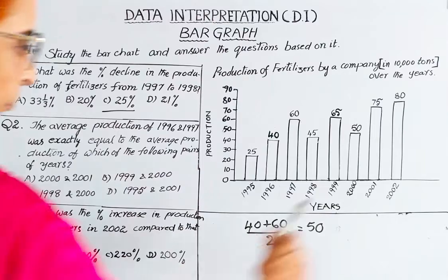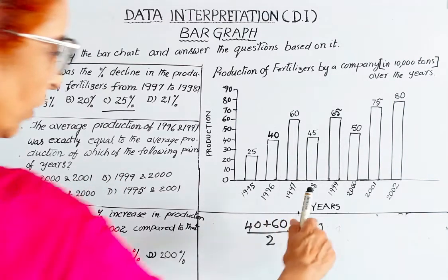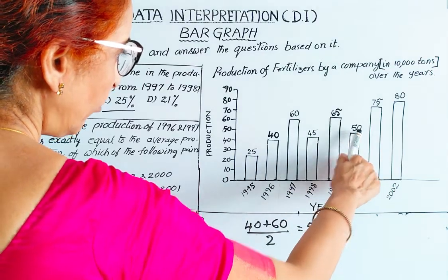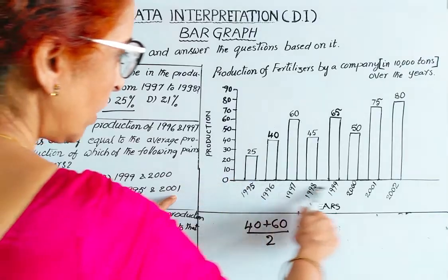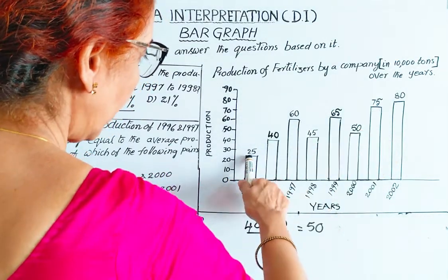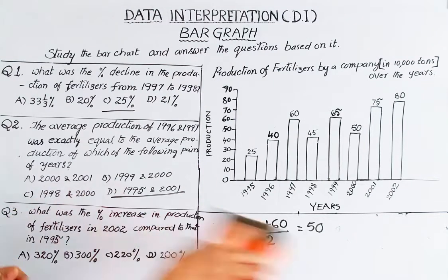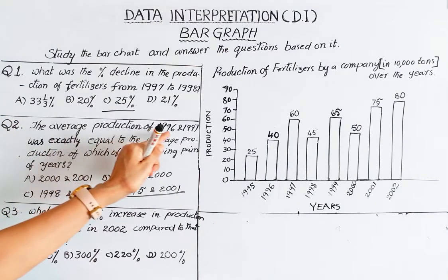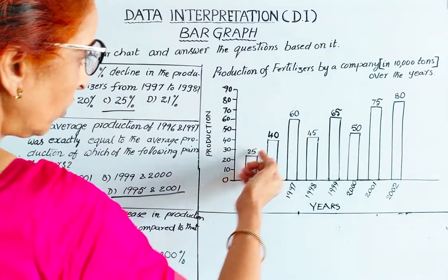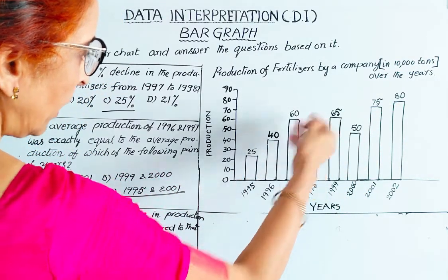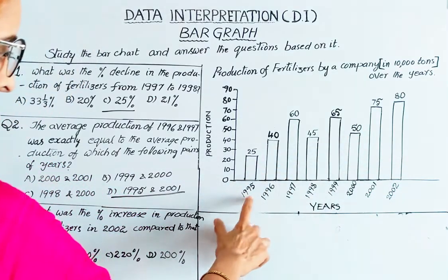Checking 1999 and 2000: 1999 is 65, 2000 is 50. Sum is 115 — not 100, so not equal to 50. Checking 1998 and 2000: 1998 is 45, 2000 is 50. Sum is 95 — not the answer. Checking 1995 and 2001: 1995 is 25, 2001 is 75. Sum is 100, divided by 2 is 50. This matches! The answer is 1995 and 2001.